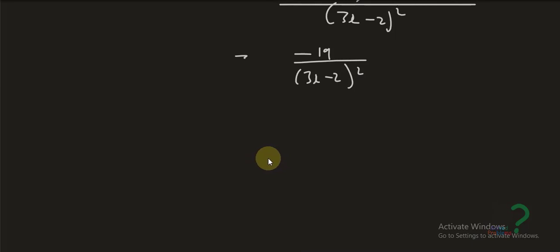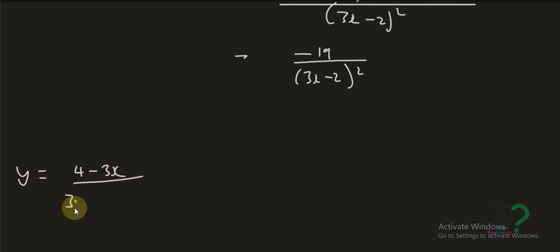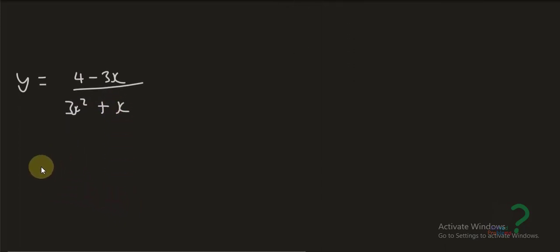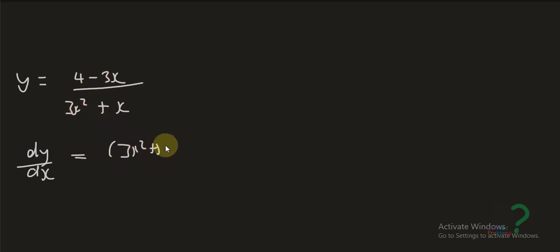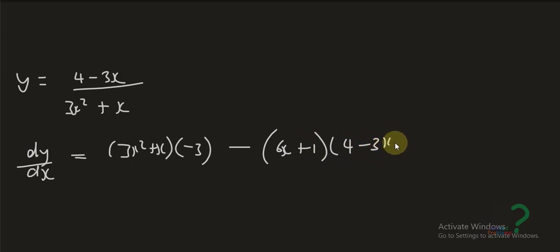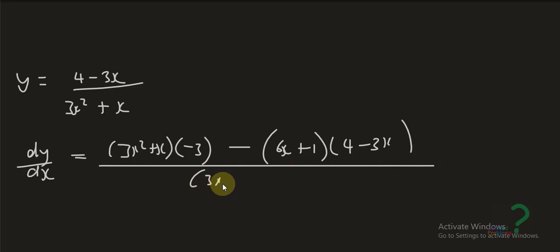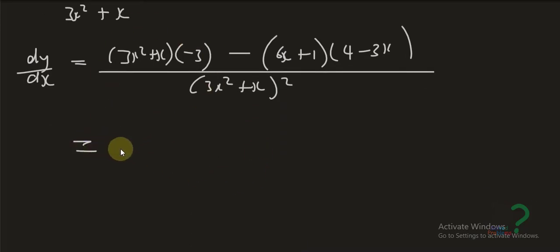Quotient rule example two: y equals (4 minus 3x) over (3x squared plus x). Applying the quotient rule: dy over dx equals (3x squared plus x) times negative 3, minus (4 minus 3x) times (6x plus 1), all over (3x squared plus x) squared. We've shown how to apply the quotient rule; further simplification is possible but not shown.